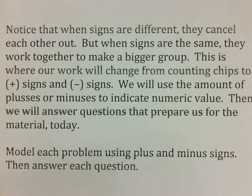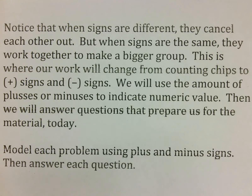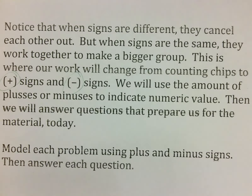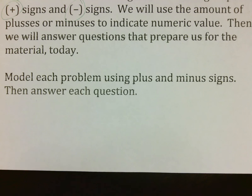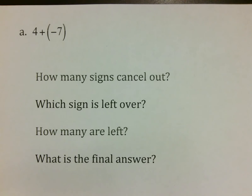This is where our work changes from counting chips to plus signs and minus signs. Instead of a yellow chip, we put pluses; instead of a red chip, we put minuses. We use the amount to indicate the numeric value. What you're going to do — just like in your Math XL — is model the problem using plus and minus signs, then answer the questions that follow. They're not tough questions, but I need you to answer them so I know you understand how the numbers work.